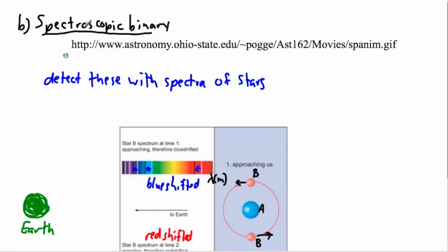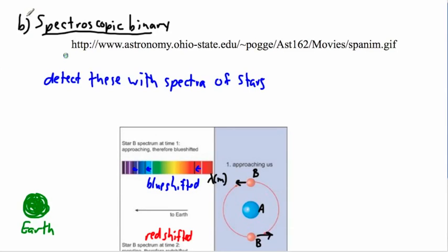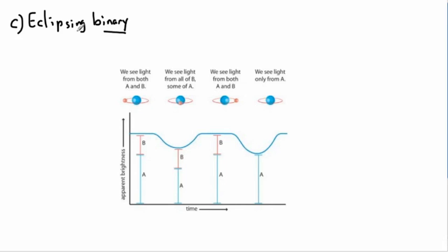The last type is called an eclipsing binary. An eclipse is when one thing passes in front of another, and that's exactly what happens here — one star passes in front of the other. Let's say we have stars A and B, with the blue one as A.